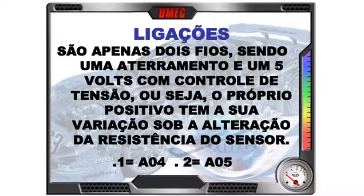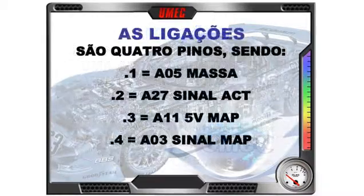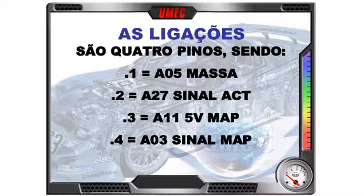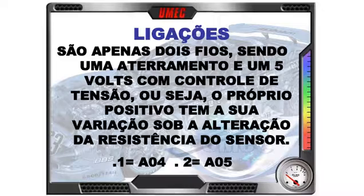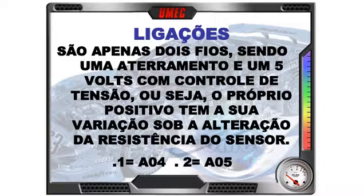Querem um exemplo? Vou mostrar as ligações do MAP e temperatura do ar: pino 1 da massa ligada ao A05. Voltando ao sensor da água: pino 2 também ao A05. Os mesmos pinos de aterramento — mas a resposta é diferente, única para cada um. O pino 1 vai à ECU ao A04 — são 5 volts. A ECU faz a alimentação com 5 volts e espera a queda para medir o valor.